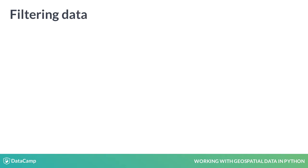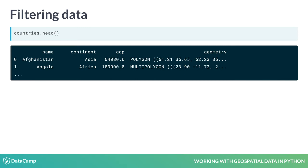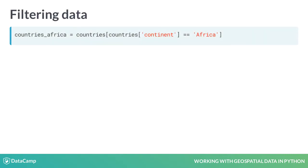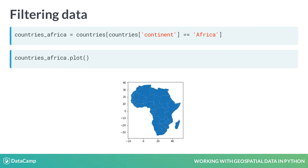Let's take the countries dataset again as an example — a polygon dataset with all the countries of the world. If you look at the first rows, you see that there is a column indicating the continent. So now we can do a comparison operation to look for all countries of the continent of Africa. This gives us a boolean series with true and false values, also called a mask. We can then use this boolean mask to filter the original GeoDataFrame. Plotting this subset again, you can see we only have the countries of Africa.